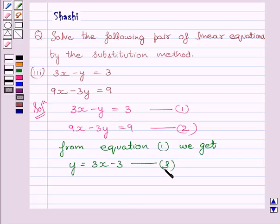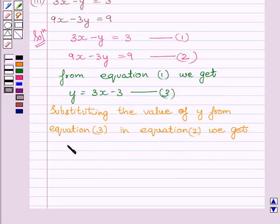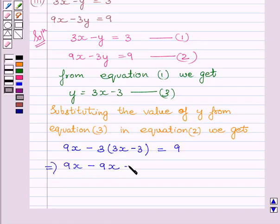Now substituting the value of y from equation 3 in equation 2, we get 9x minus 3 multiplied by (3x minus 3) is equal to 9. This implies 9x minus 9x plus 9 is equal to 9.